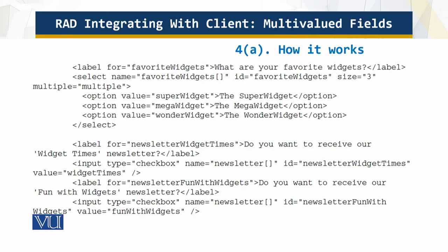The web form registration_multi.html is very similar to the previous registration page. However, this form contains a multi-select list box for 'favorite widgets' and two checkboxes. Those checkboxes have square brackets in their names. The square brackets tell the PHP engine to expect multiple values for these fields and to create corresponding nested arrays within the relevant super global arrays, $POST and $REQUEST.